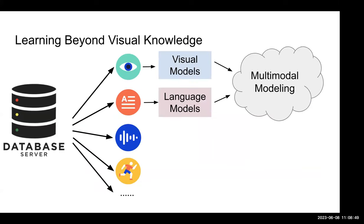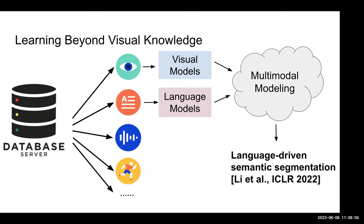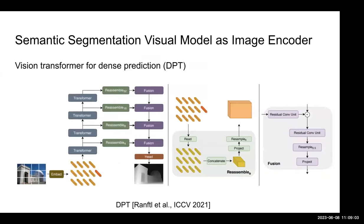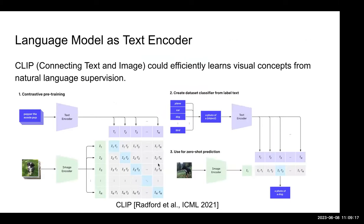To solve this problem and break these limitations, we propose a novel multimodal approach — Language-driven Semantic Segmentation, LSEC — that combines the language model and the visual model together. We select one of the most popular semantic segmentation models, region transformer for dense prediction (DPT), as our image encoder. The input is the image and the output is the corresponding segmentation map. We also select one of the most popular NLP models, the pre-trained CLIP text encoder, as our language model.